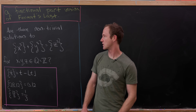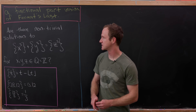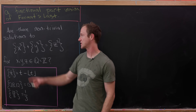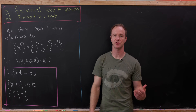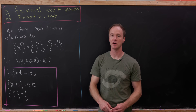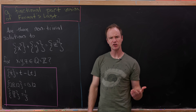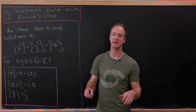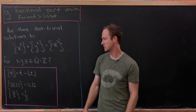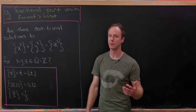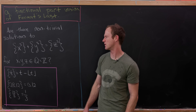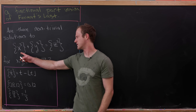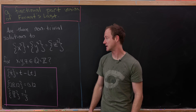Our goal is to answer the question: are there non-trivial solutions to the equation where the fractional part of x³ plus the fractional part of y³ equals the fractional part of z³? By non-trivial, x, y, and z are not allowed to be integers but are allowed to be rational numbers. If they're integers, this is boring because the fractional part of an integer is zero — you simply get zero equals zero.